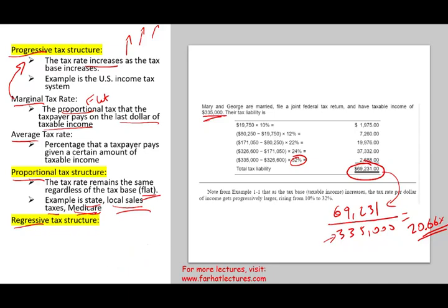And the third tax rate is regressive tax rate. What is a regressive tax rate? Well, regressive is kind of opposite of the progressive. The tax rate decreases as the tax base increases. So simply put, the more you make, the lower is your tax. That's how it works. Regressive is the opposite of progressive. Progressive is the more you make, the more you pay. Regressive, the more you make, kind of the less you pay. Now what could be an example of regressive? Well, Social Security.